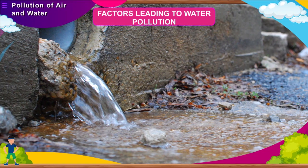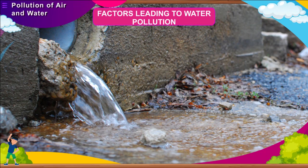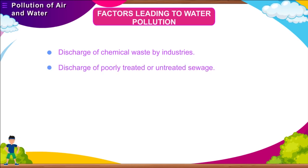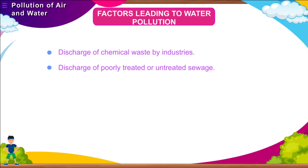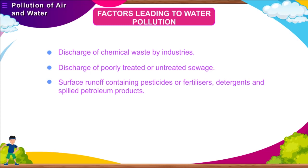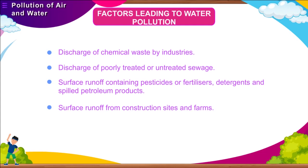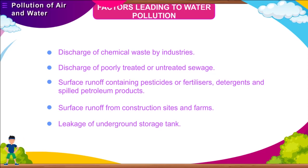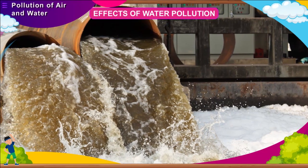The principal sources of water pollution include: discharge of chemical waste by industries; discharge of poorly treated or untreated sewage; surface runoff containing pesticides or fertilizers, detergents and spilled petroleum products; surface runoff from construction sites and farms; and leakage from underground storage tanks.